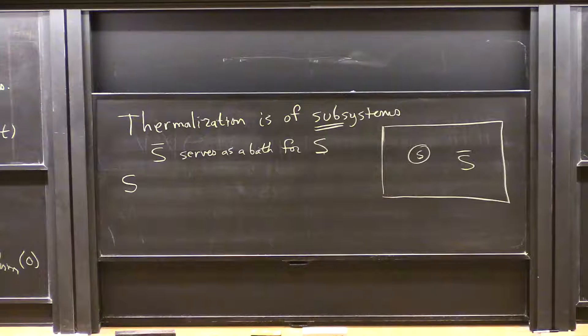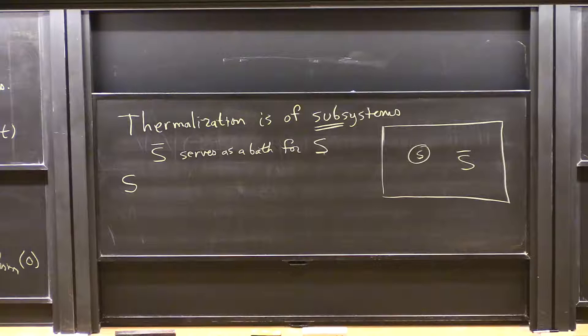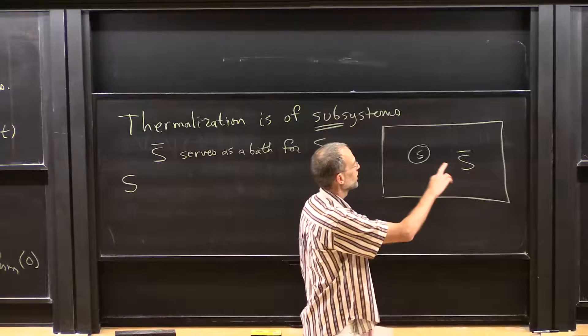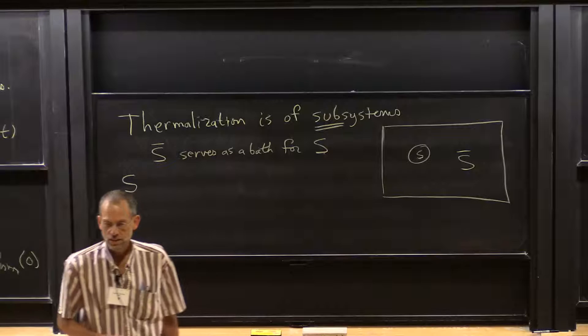But the subsystems are all entangled with each other. The full system is not in a Boltzmann distribution, because the Boltzmann distribution doesn't have any non-trivial entanglement between subsystems — or it has a little bit, but not a lot. The real system might have a very rich entanglement structure between subsystems, which is not there in the Boltzmann distribution. They're in the same state they would be in if the full system were in a Boltzmann distribution. We're going to take S-bar to infinity first with S finite.